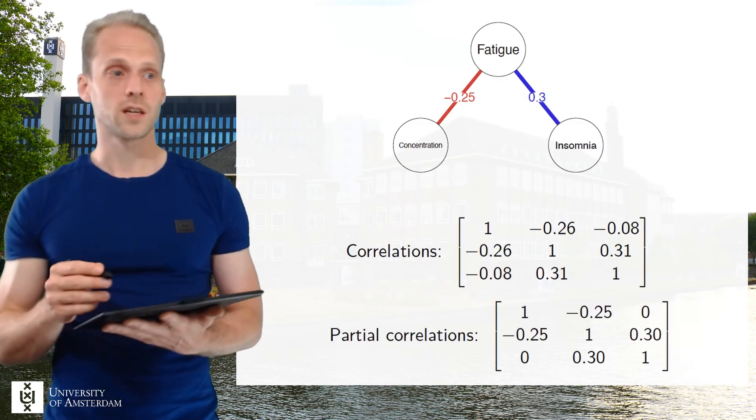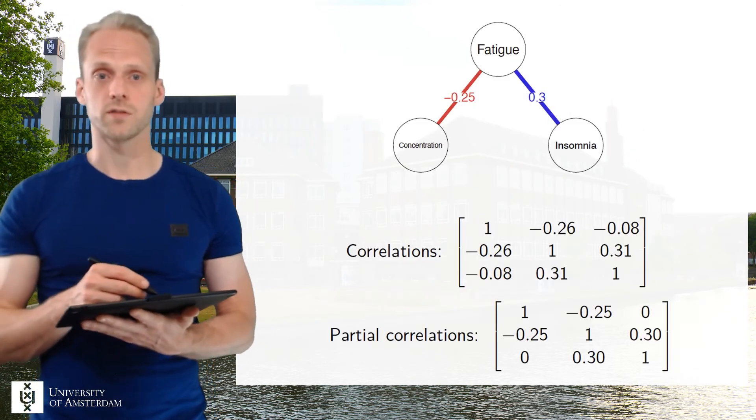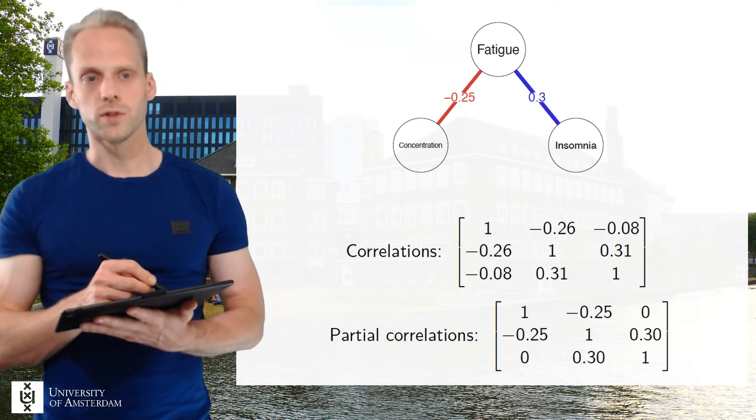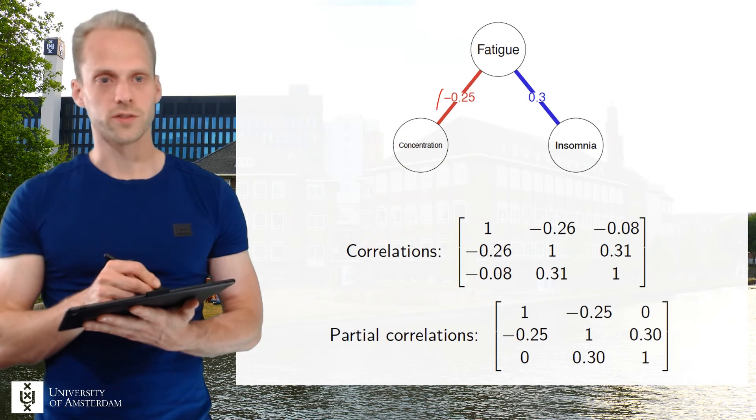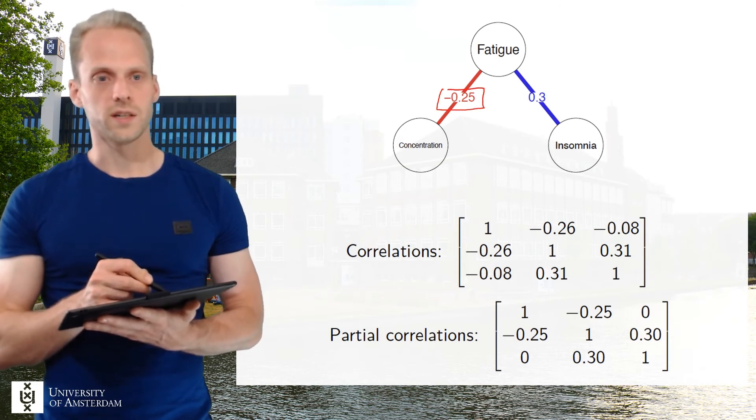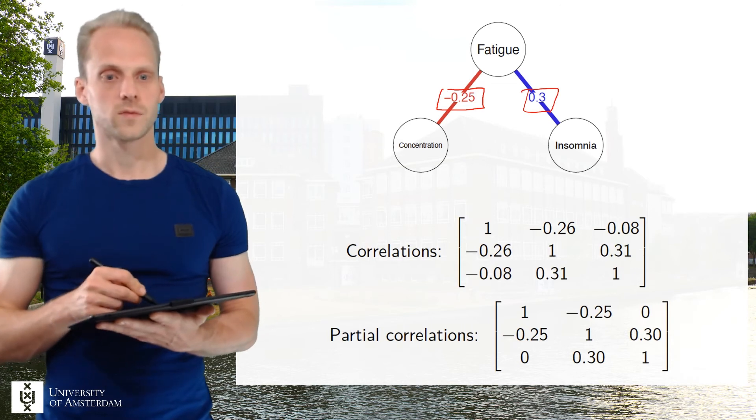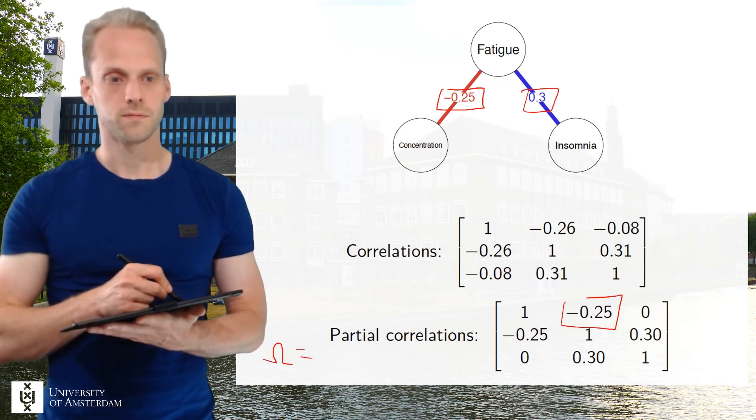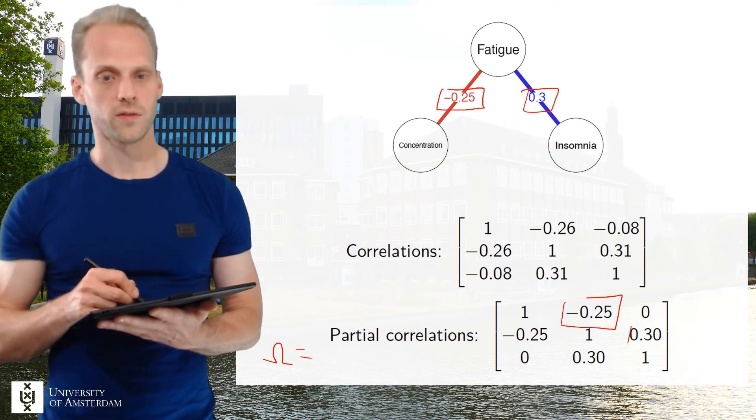Okay so let's take a look at an example of a Gaussian graphical model or a partial correlation network. So here I have three variables with two partial correlations and a non-zero. This is minus 0.25 and 0.3. So those are here in this omega matrix, minus 0.25 and 0.3.